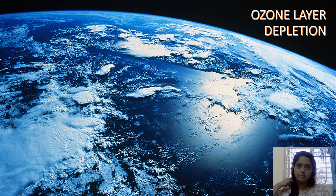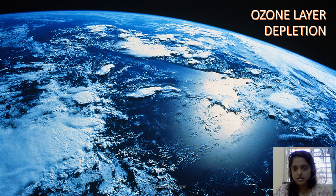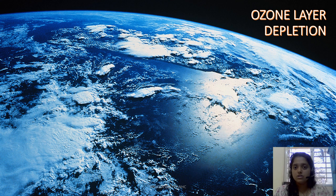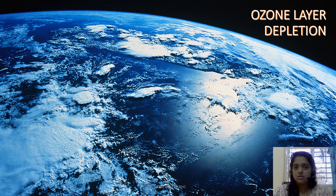We have learned about climate change and global warming. Next we would learn about ozone layer depletion. As you all know, ozone layer is the layer which protects the earth's atmosphere — it is the protective layer around the earth's atmosphere. What it does is it absorbs heat energy from the earth's surface and also does not allow any ultraviolet rays from the sun to penetrate through.